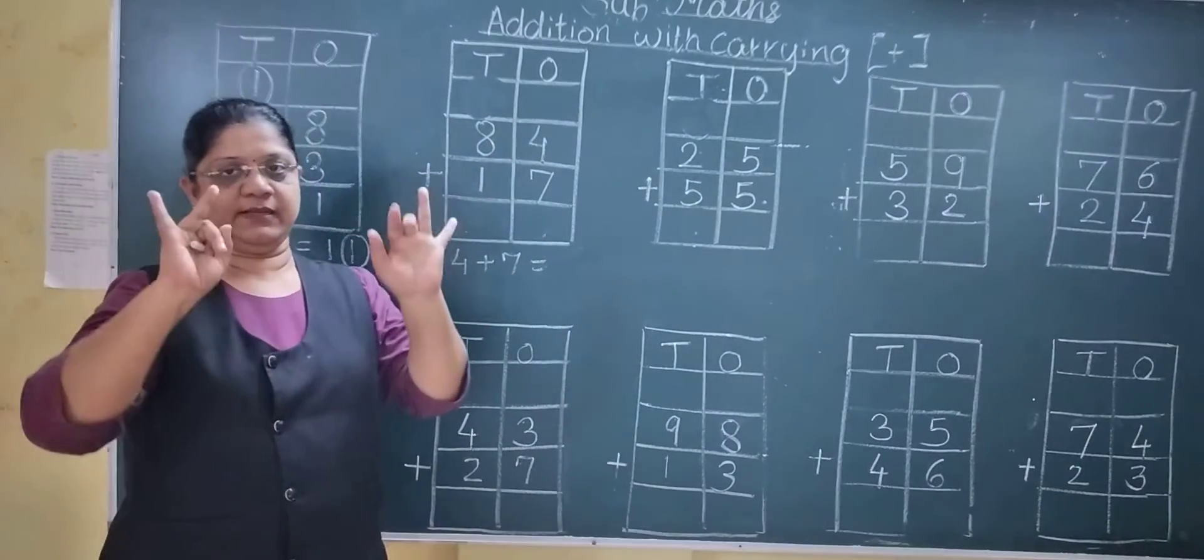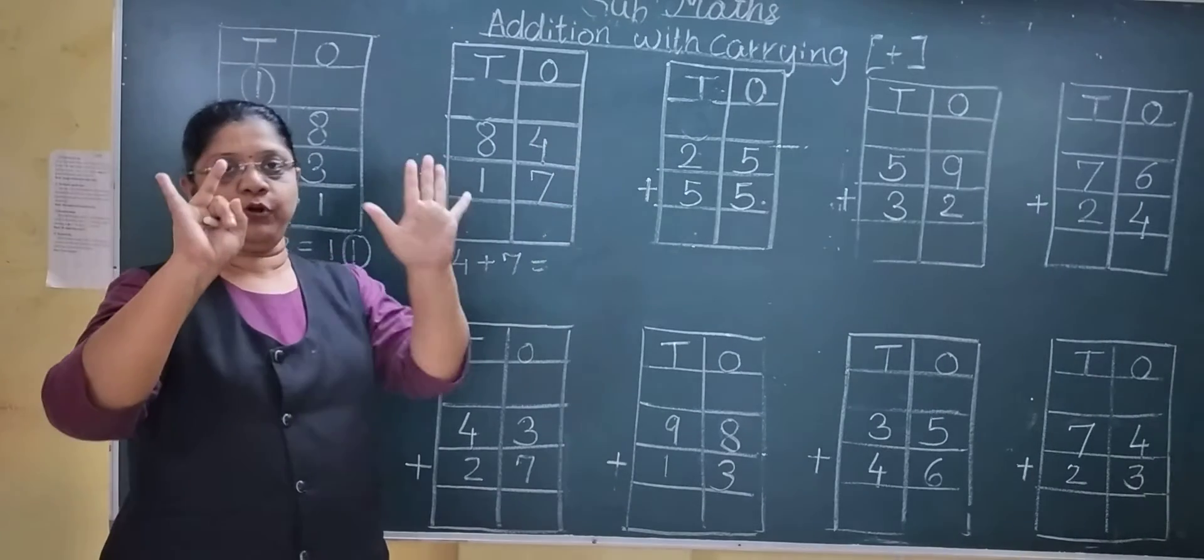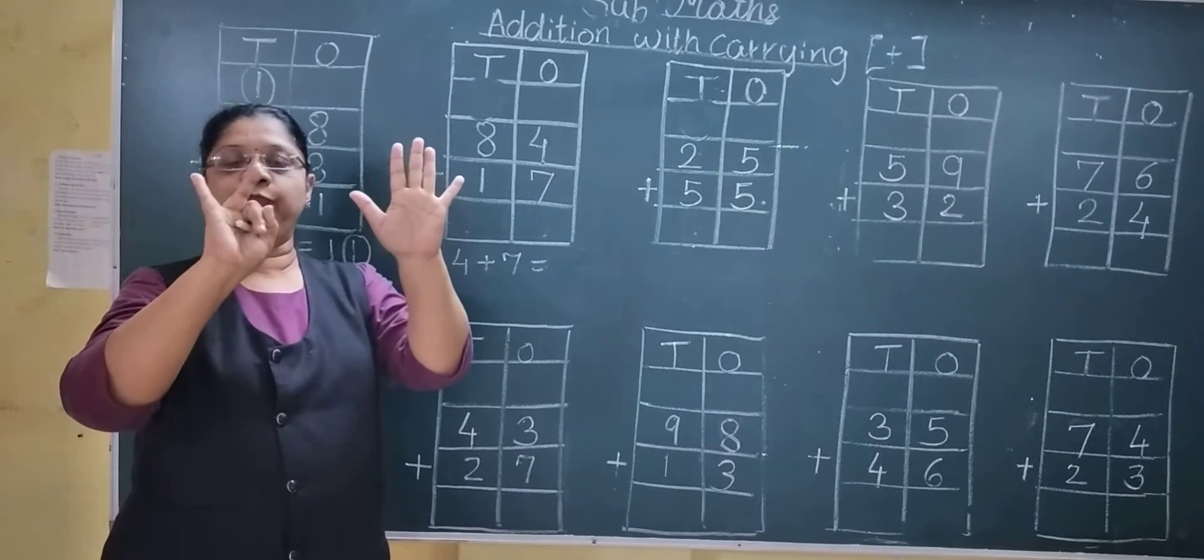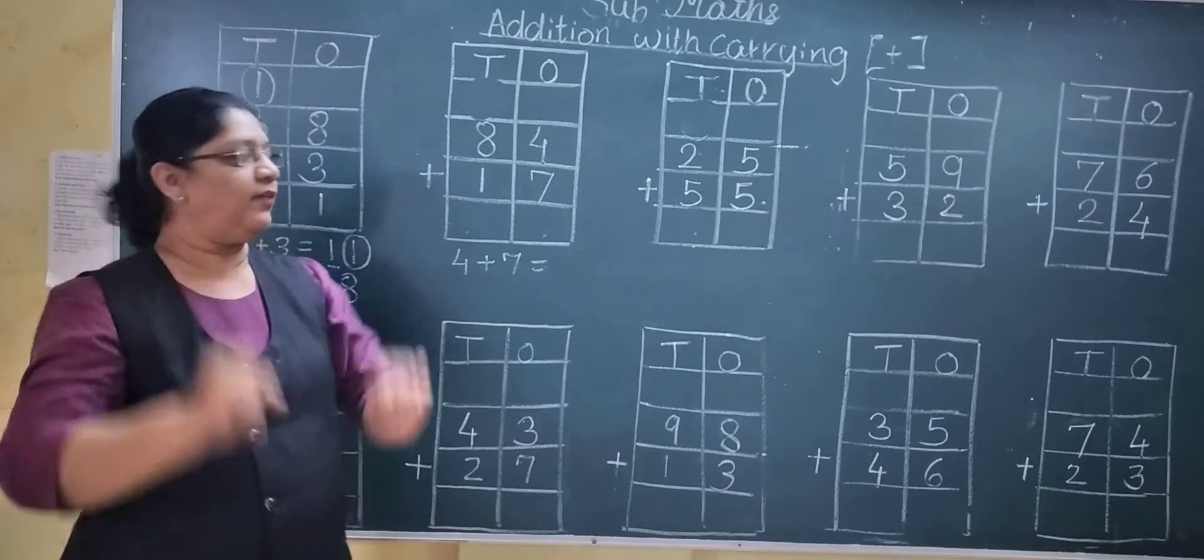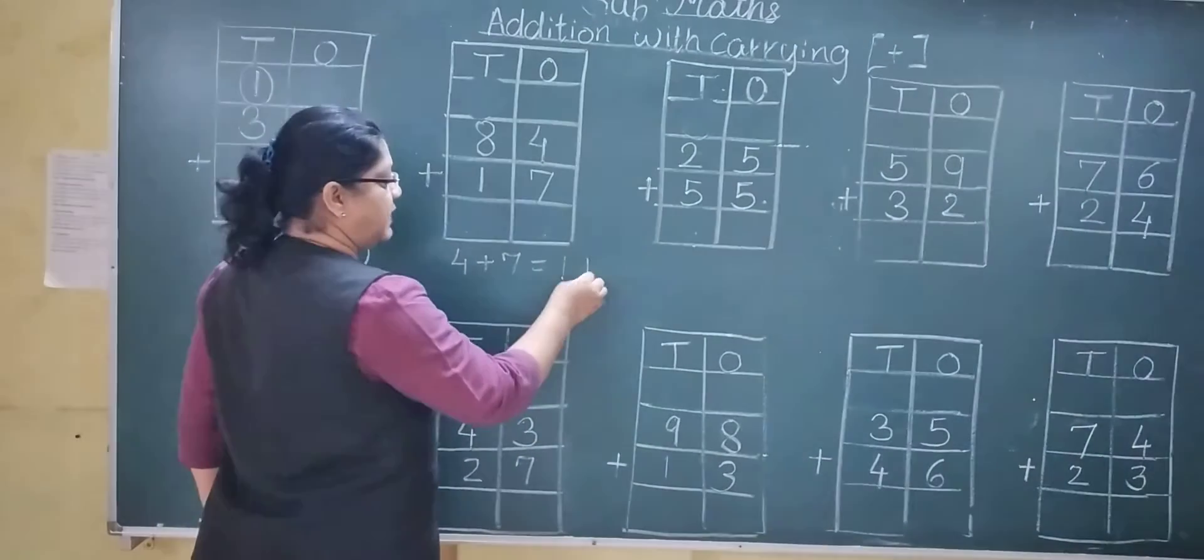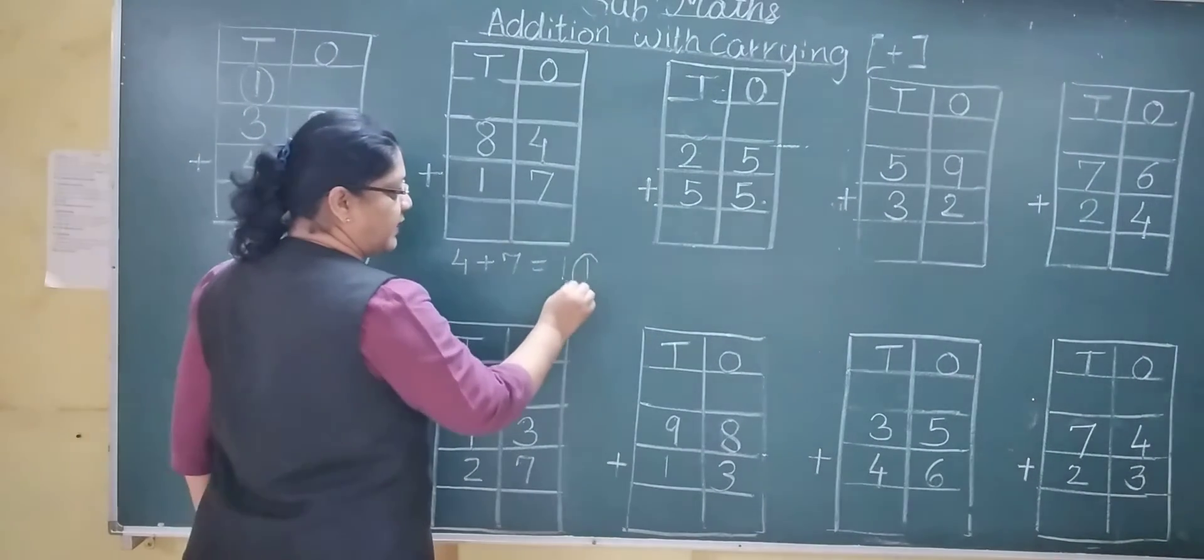Show your 7 fingers and count after 4. After 4, 5, 6, 7, 8, 9, 10, 11. See, 1 ten and 1 one.